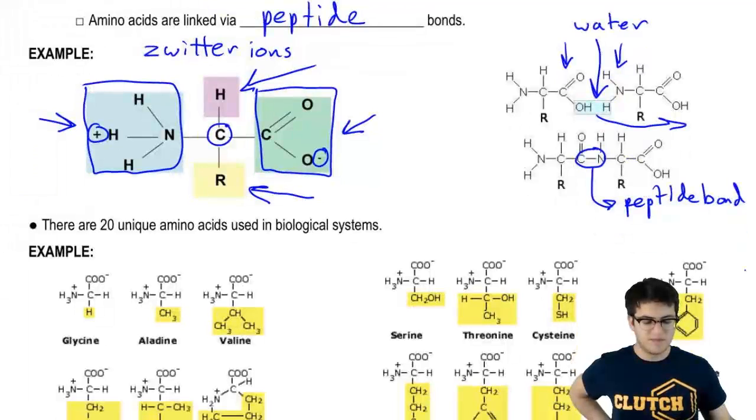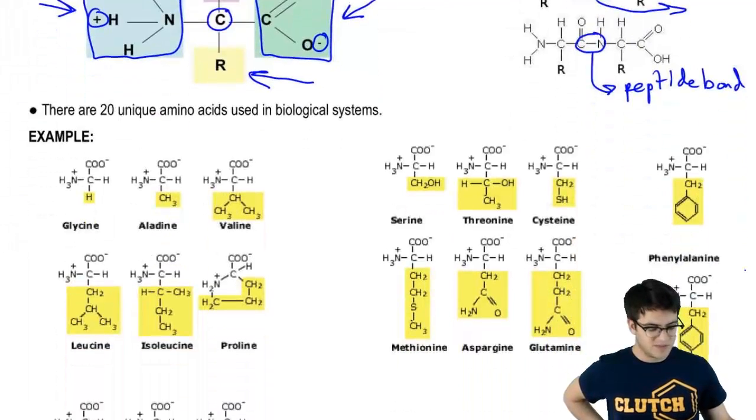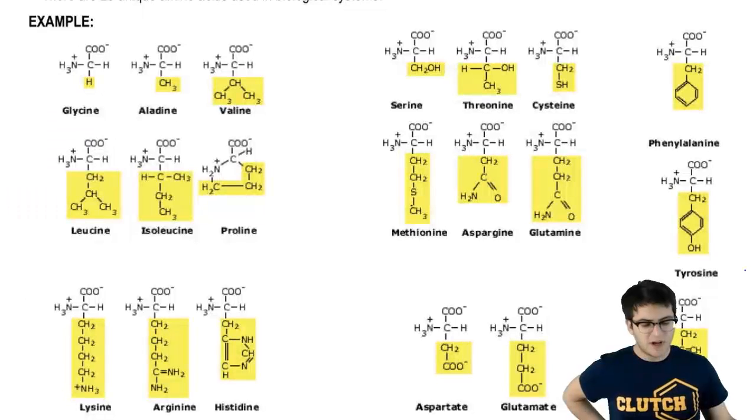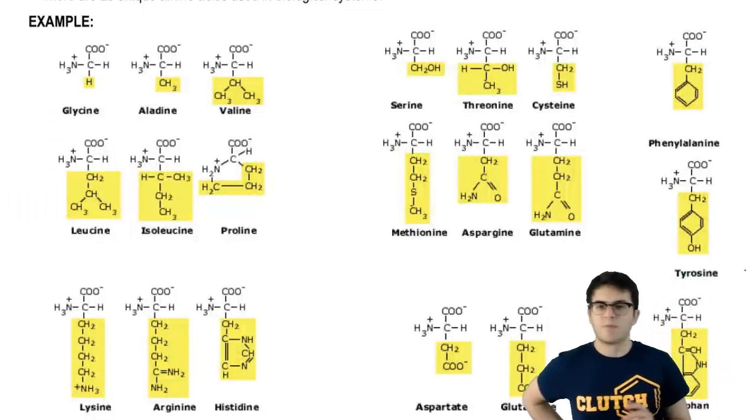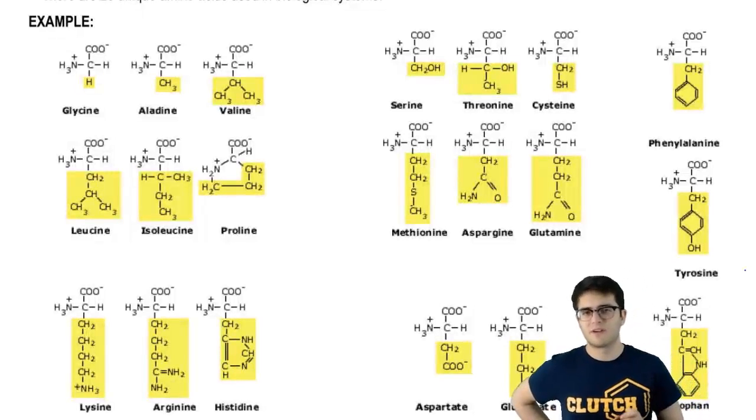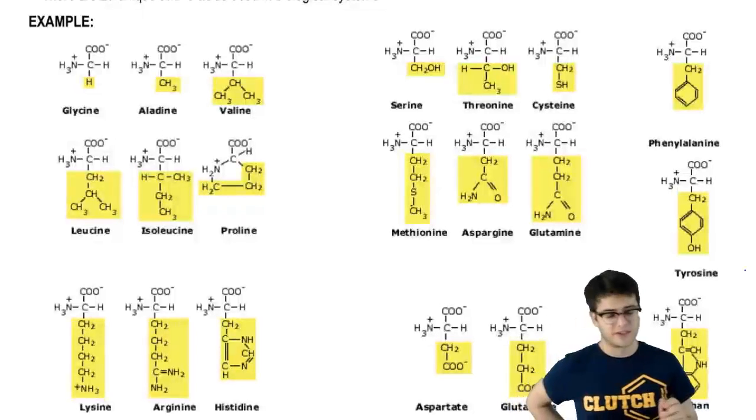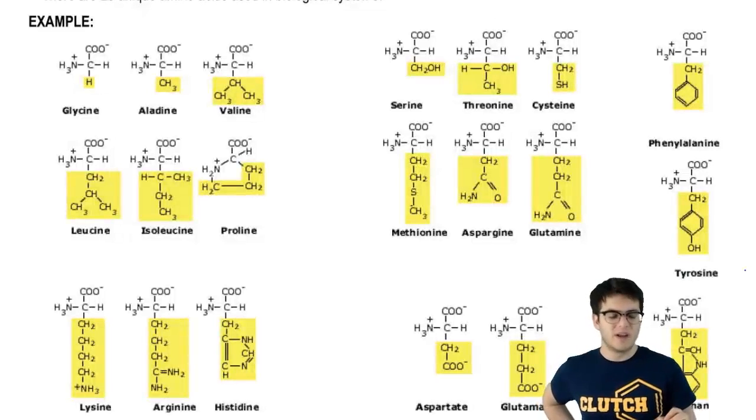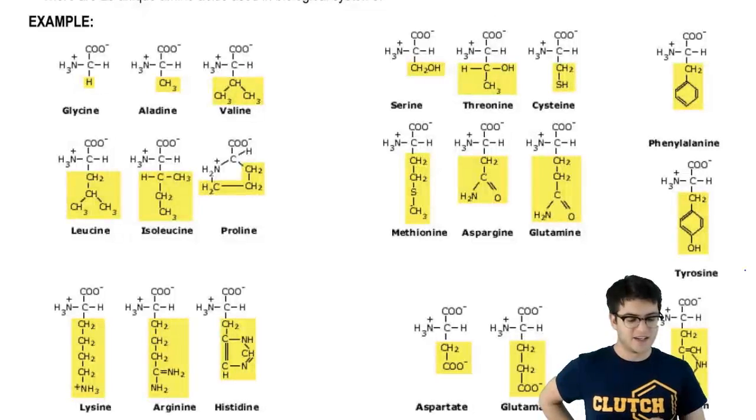Now, there are 20 unique amino acids used in biological systems and knowing all of them is probably a good idea for the long run, but definitely more than you're going to have to do for this course. However, it's good to know the general trends in amino acids.